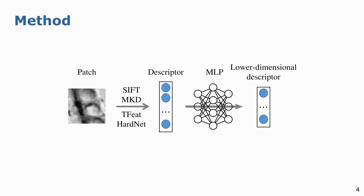Here is an illustration of our method. We first use feature extractors to extract descriptors for image patches. Then we pass the descriptor to a multilayer perceptron to get a lower-dimensional descriptor. Our goal is to learn the multilayer perceptron such that the lower-dimensional descriptor is compact and performs well in downstream tasks.